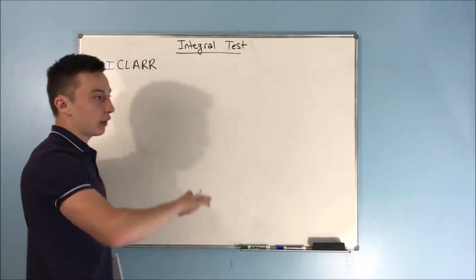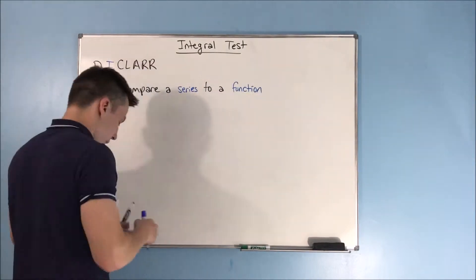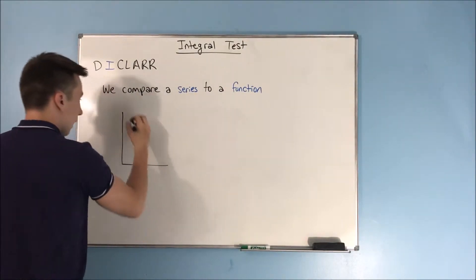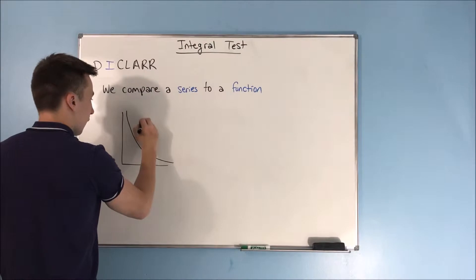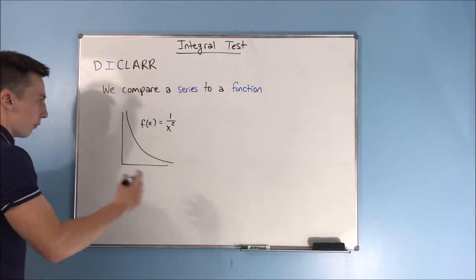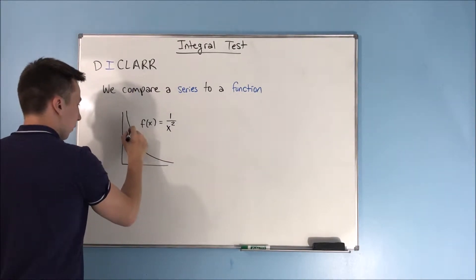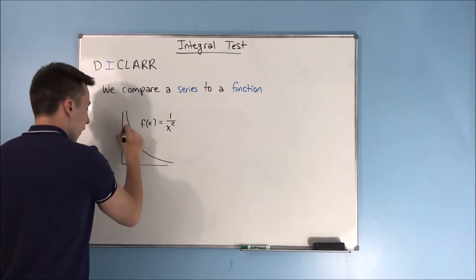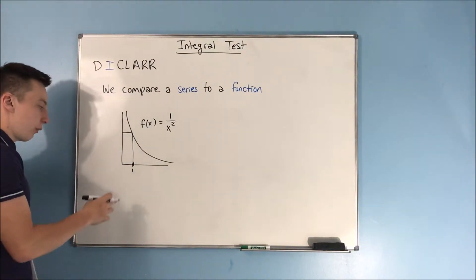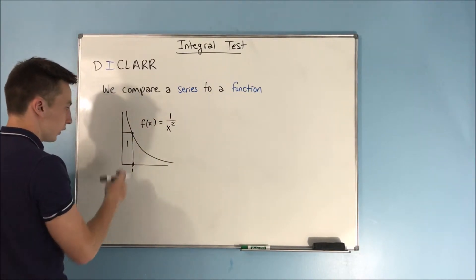The brief summary of the integral test is that we're going to be comparing a series to a function. If you look at the graph of f(x) = 1/x², and we're trying to take the area under this curve — if we do a right-hand Riemann sum with a width of one, the area of our first block is going to be one times one, which is just one.